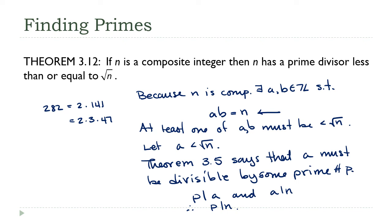I did gloss over one point — our theorem says a must be divisible by a prime number if it's greater than one. And a is indeed greater than one: if a were equal to one, then b would equal n, and that's not what it means to be composite. To be composite, we have to write n as the product of two numbers other than one and n. So a does, in fact, have to be greater than one.